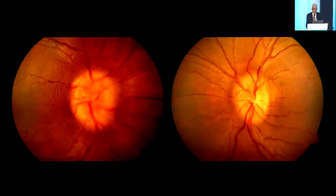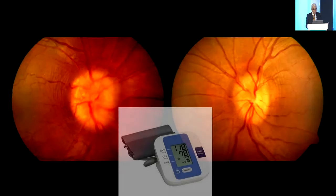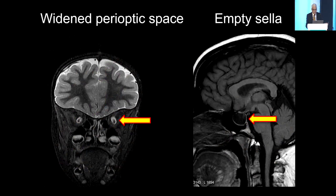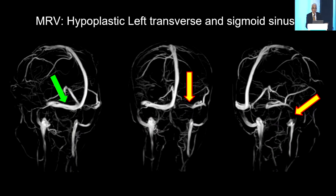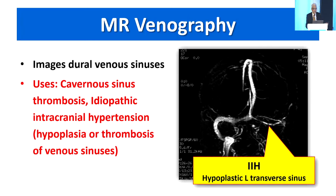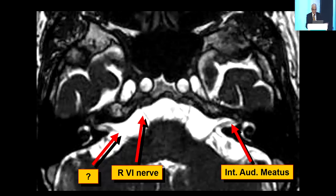In a patient with papilledema, don't forget to first check the blood pressure. Classically in IIH you'll see widened perioptic spaces and an empty sella. Don't forget to do an MR venogram where you can see hypoplasia of the dural venous sinuses. MRI plus MRV is important in presumed IIH cases.